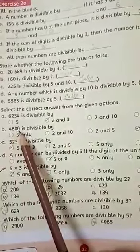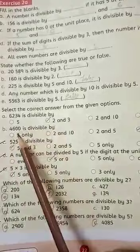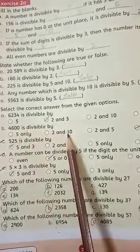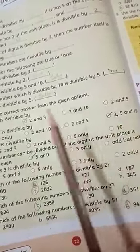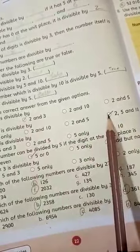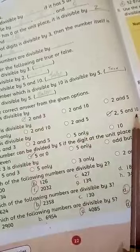4,600 is divisible by 5 only, 2 and 10, 2 and 5, 2, 5 and 10. The correct option is option D, 2, 5 and 10.